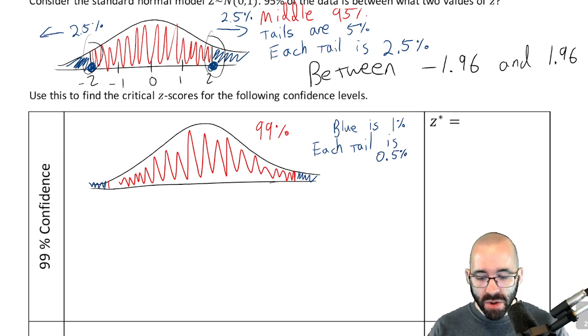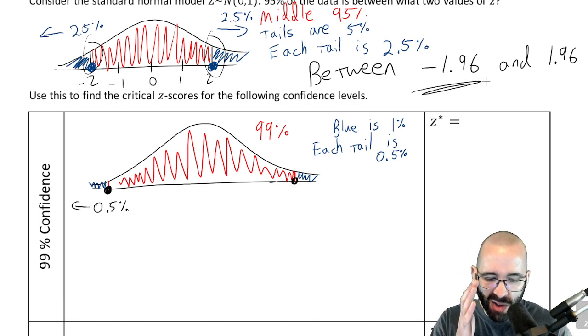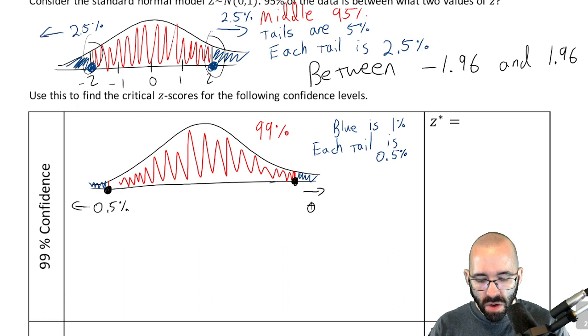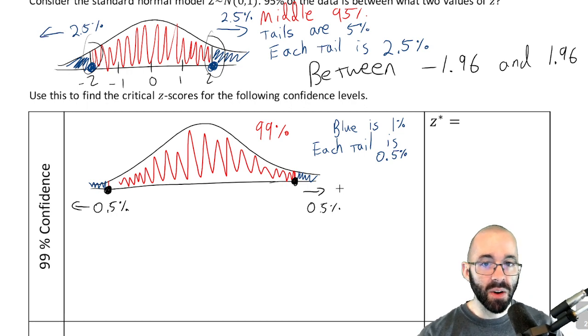Okay, so then what we have to do, right, is find what data value is above half a percent of the data. And similarly, and again it's symmetric so we really only need one. Similarly, what data value is below only half a percent of the data? That's how we'll find the z-score, that's how we'll find that critical z-score.